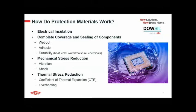So what kind of properties do materials need in order to work as a protection material? First, they need to be good electrical insulators. They also need to be able to completely cover and seal all of the components used on your board. Therefore, they require good wet-out capability, and depending on the level of protection required, they also need to provide a certain level of adhesion. And of course, all this needs to be durable to resist against heat, cold, water, or chemical exposure.